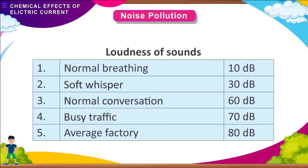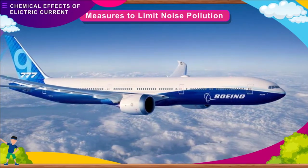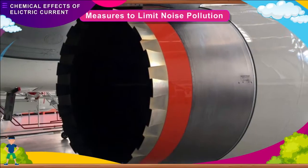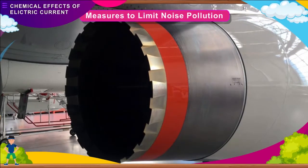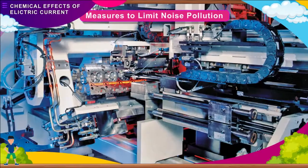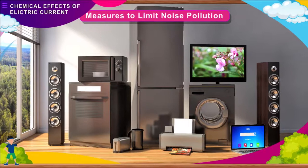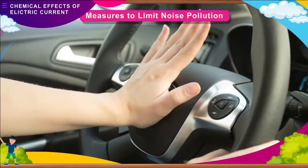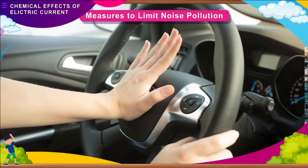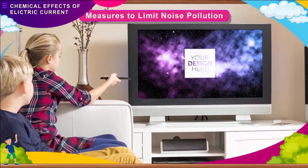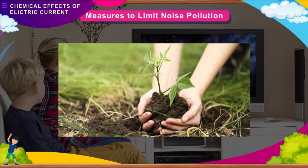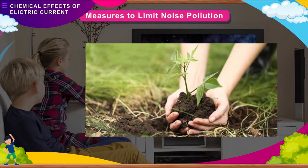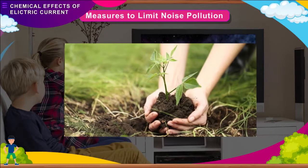To control noise, we must control the sources of noise. Silence devices must be installed in aircraft engines, transport vehicles, industrial machines, and home appliances. All noisy operations must be conducted away from residential areas. Use of automobile horns should be minimized. Television and music systems should be played at low volumes. Trees should be planted along roads and around buildings to cut down sounds reaching residents, thus reducing the harmful effects of sound pollution.